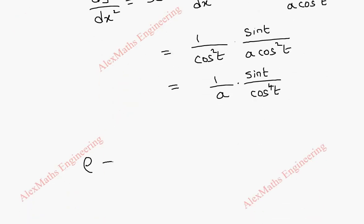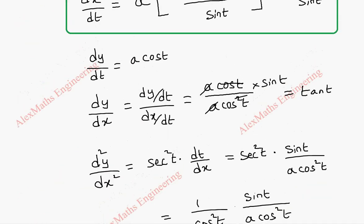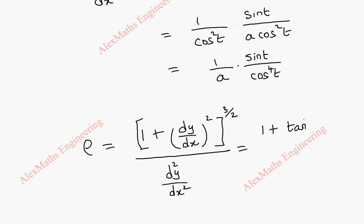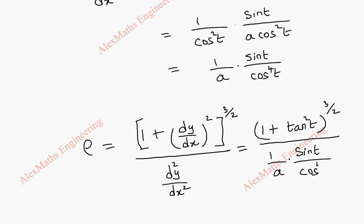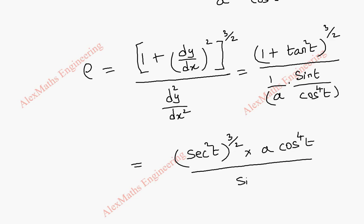Coming to the radius of curvature formula: ρ = (1 + (dy/dx)²)^(3/2) / (d²y/dx²). So this is (1 + tan²t)^(3/2) divided by (1/a · sin t / cos⁴t). Now 1 + tan²t = secant²t, so we have secant²t whole power 3/2. And the two terms in the denominator go to the numerator as a·cos⁴t, divided by sin t.